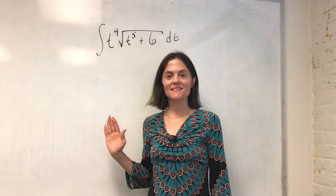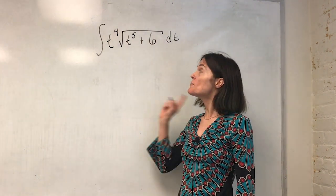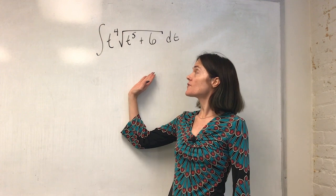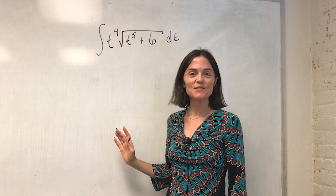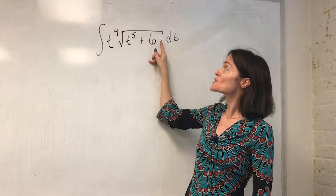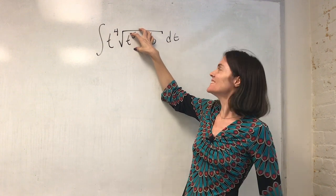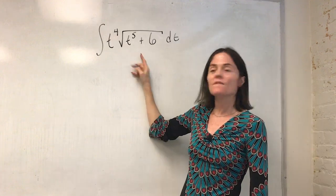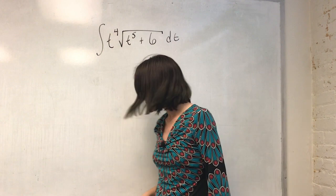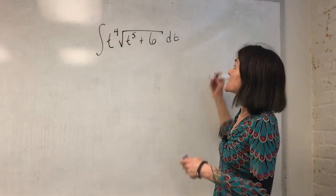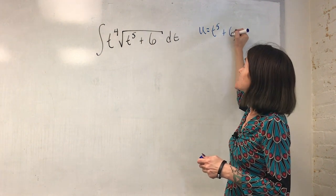If we look at this, this is not one that's directly off our list that I showed at the start. But this is from calc one material. Namely, we are going to use substitution. Why? Well, you see, I have a square root. Inside of it, I have a function. So I have an inside function. And then if you think about the derivative of this, there's a multiple of the derivative in this integrand. So this is substitution where u is what's inside t to the fifth plus six.